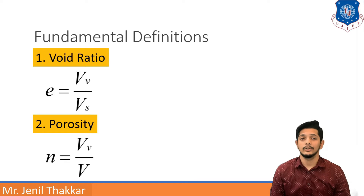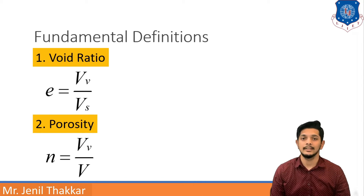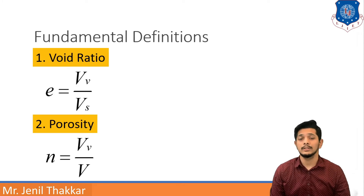Porosity is denoted by small n. It is defined as the ratio of Volume of Voids to Total Volume. It is again a ratio of Volume of Voids to Total Volume but is generally expressed in percentages. The value of Porosity lies between 0 and 1.